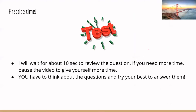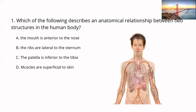Now we'll practice with some questions. Question one: option A says the mouth is anterior to the nose. The mouth is below the nose, so the mouth is actually inferior to the nose — that's not correct.